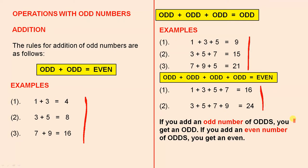So the rule at the end says: if you add an odd number of odds, you get an odd. If you add an even number of odds, you get an even.